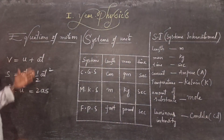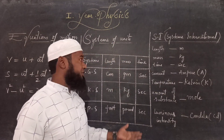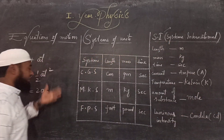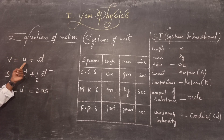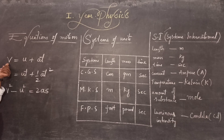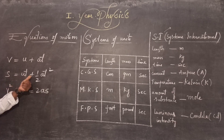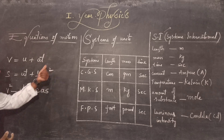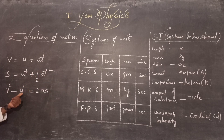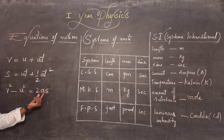The next part is Equations of Motion. In all chapters we use these equations of motion and these systems of units — we use the SI system of units. There are three equations of motion. The first one is V = U + AT, where V is final velocity, U is initial velocity, A is acceleration, and T is time. The second equation of motion is S = UT + half AT squared, where S is displacement, U is initial velocity, T is time. The third equation is V squared minus U squared = 2AS — final velocity, initial velocity, acceleration, and distance.